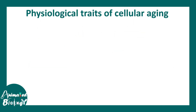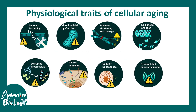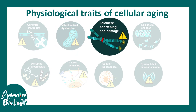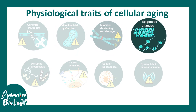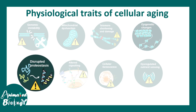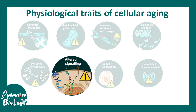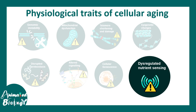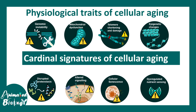There are several physiological traits of cellular aging. In this video we would try to understand how genomic instability, mitochondrial dysfunction, telomere shortening and damage, epigenetic changes, disrupted proteostasis, altered cell signaling, cellular senescence, and lastly dysregulated nutrient sensing can affect the process of cellular aging. These are the cardinal signatures of cellular aging and all these factors are involved in the process.